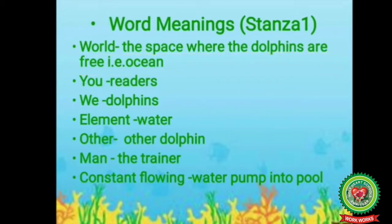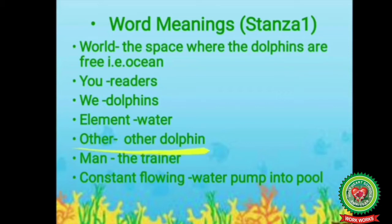Let us discuss the word meanings of stanza one. 'World' refers to the space where the dolphins are free, that is the ocean. 'You' addresses the readers. 'We' refers to the dolphins. 'Element' is water. 'Other' means the other dolphin. 'Man' is the trainer. 'Constant flowing' refers to water pumped into the pool.